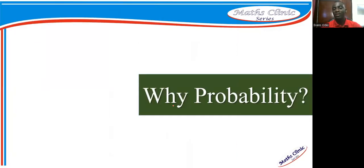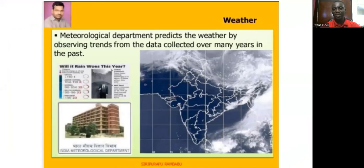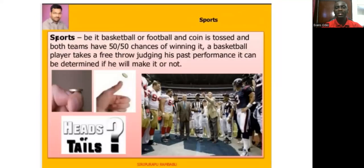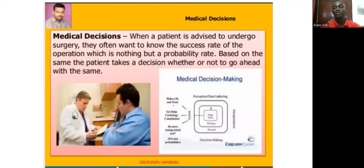We all do probability every now and then without knowing it. We study probability in school because it is very important. At the meteorological department, they predict weather by observing trends from data collected over many years — they can say there's a 90% chance of rain today. That is probability. In sports like basketball or football, both teams have 50-50 chances of winning a toss.